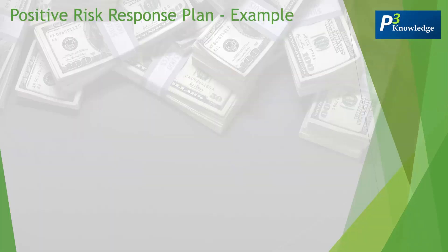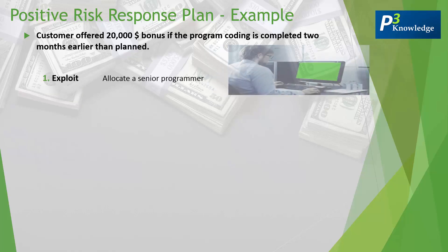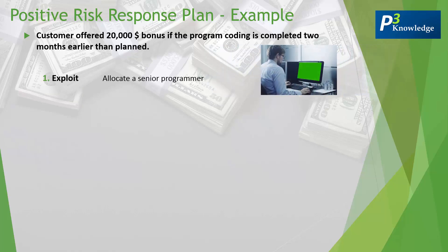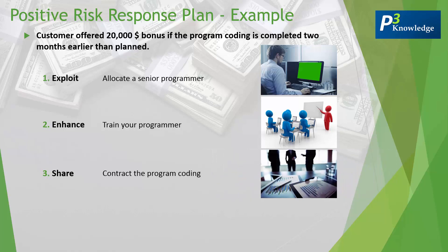Let's take an example of how to deal with positive risks. A customer offers $20,000 in bonus if the program coding is completed two months earlier than planned. To exploit the situation, we could hire a senior programmer able to complete the coding in that timeframe and capture the $20,000 bonus. The second strategy, enhance, would involve giving certain training to our programmers to increase their chances of getting the bonus. Third, share — by contracting a specialized coding company and sharing this opportunity with them to get the $20,000 bonus.